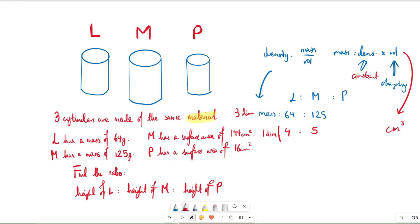Now let's look at the surface area. We've got M with a surface area of 144 and P with a surface area of 16. Surface area is measured in centimeters squared, so that's our two-dimensional ratio. To get into our one-dimensional, which we need to compare the ratio of L to M and then M to P, we have to square root it. The square root of 144 is 12, and the square root of 16 is 4.